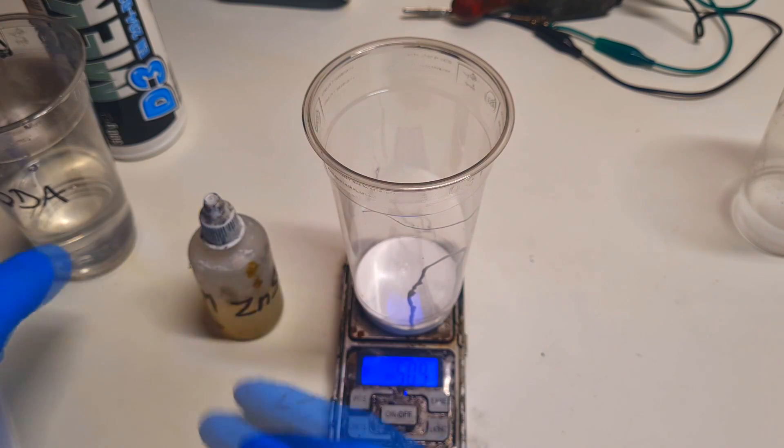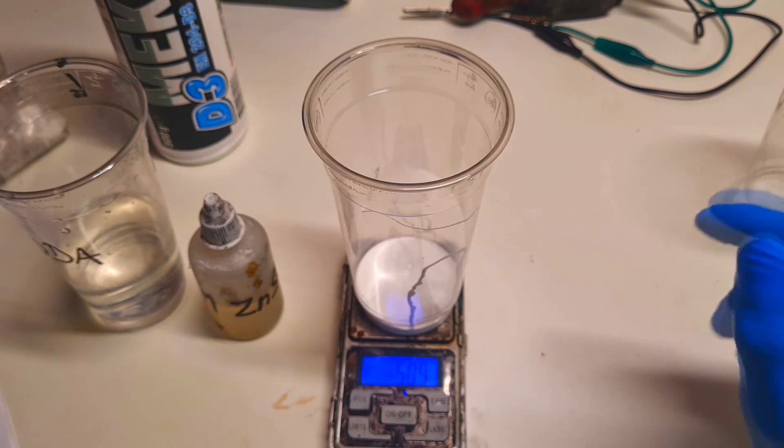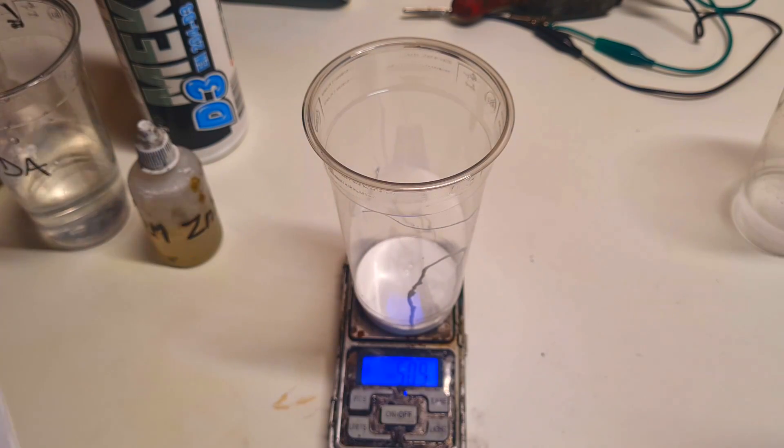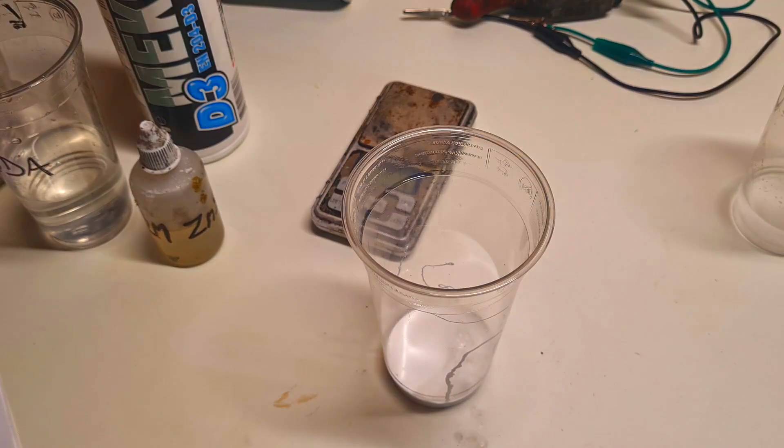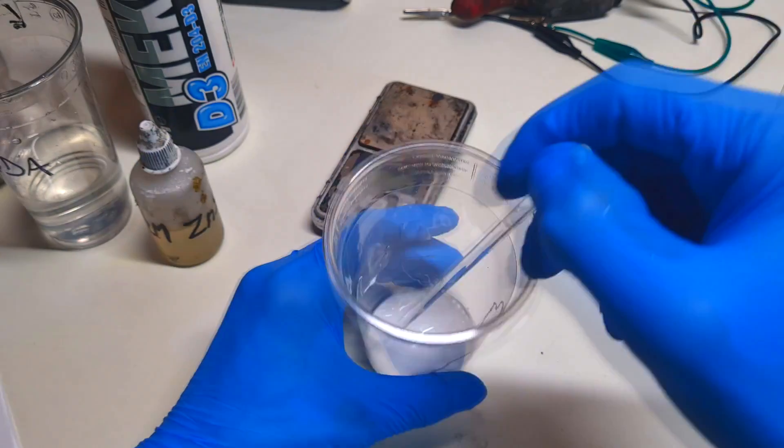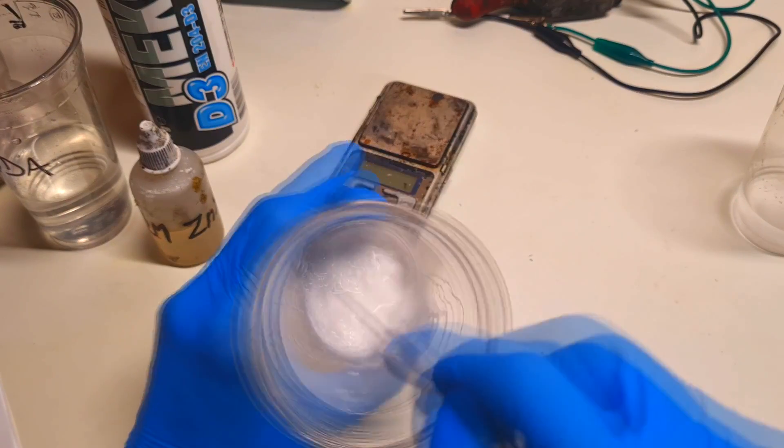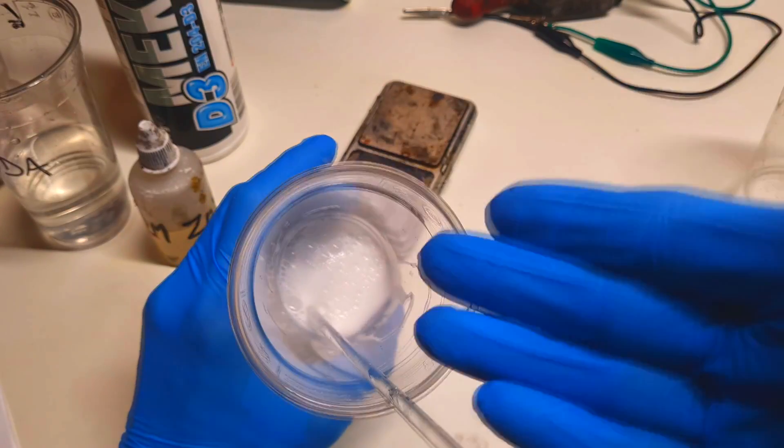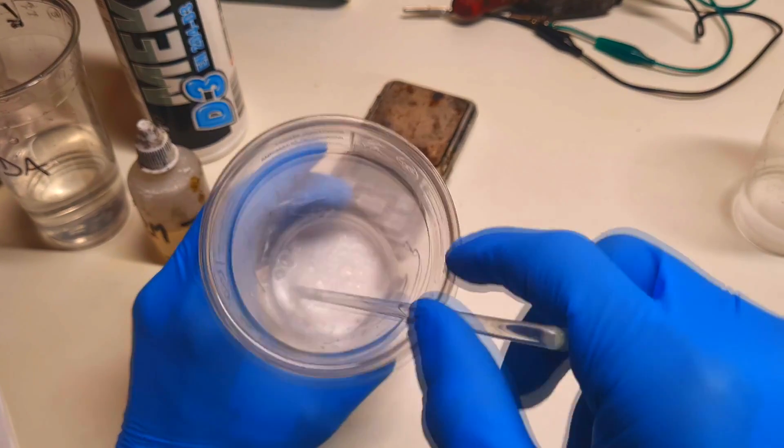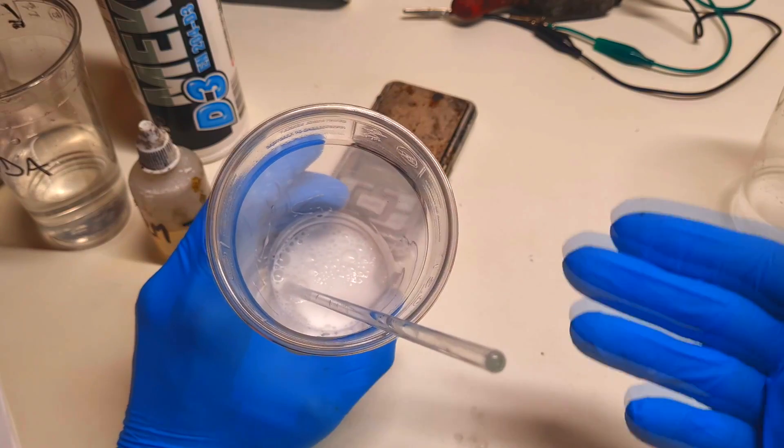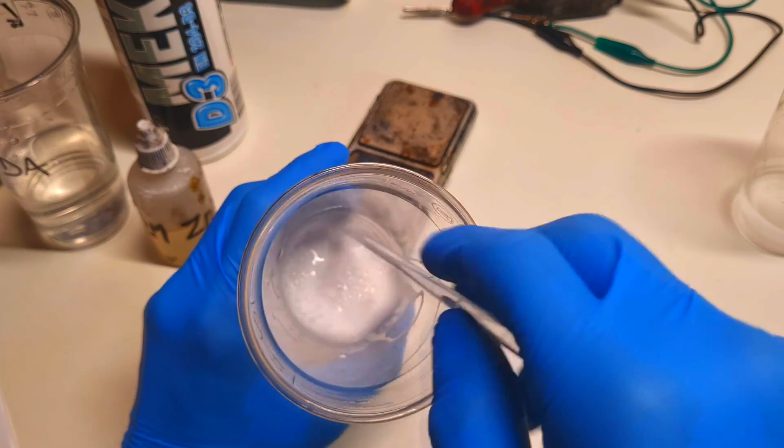The ratio between the electrolyte water to the PVA is around 50-50. Now, in this case, right now in this mix, you can also add some additives. For example, you can add some glass fibers to strengthen the polymer gel.